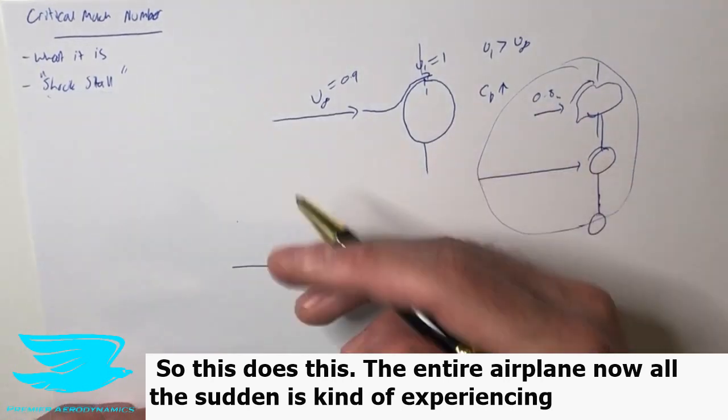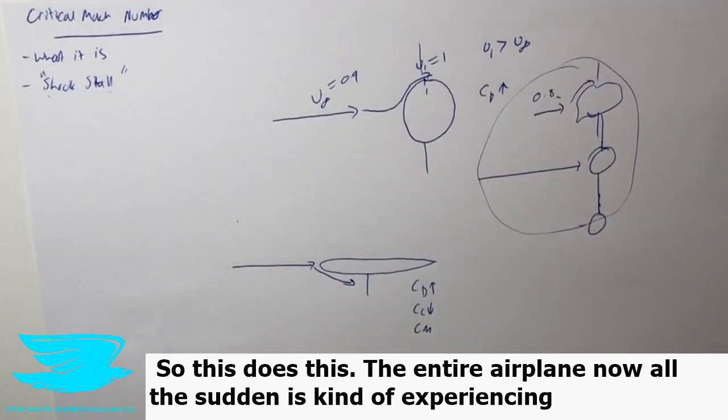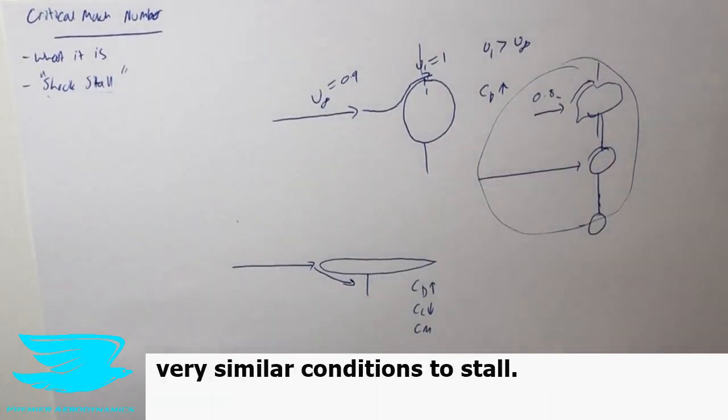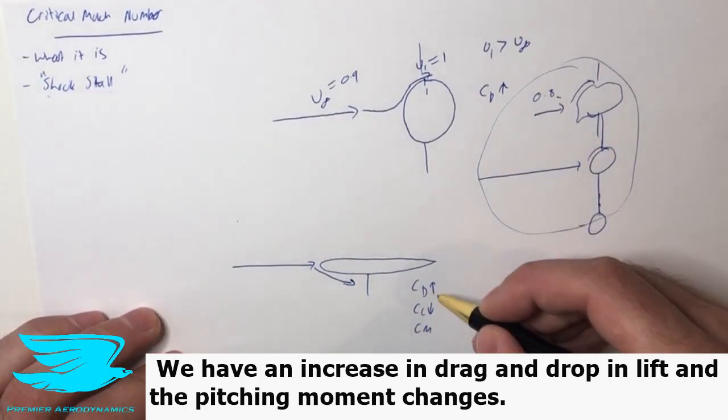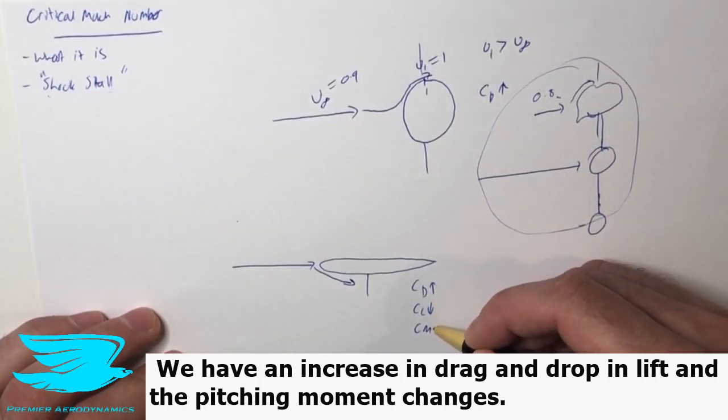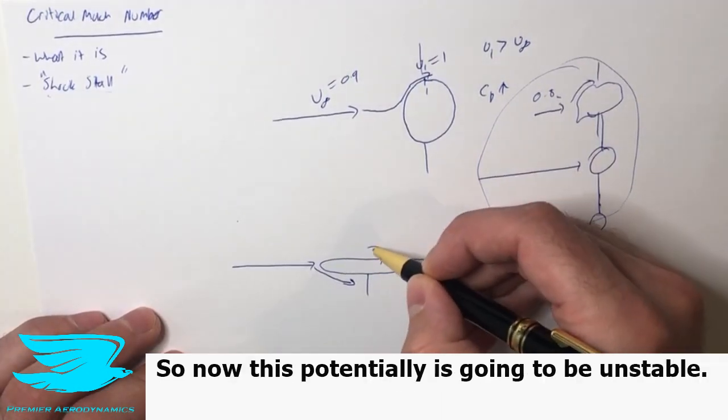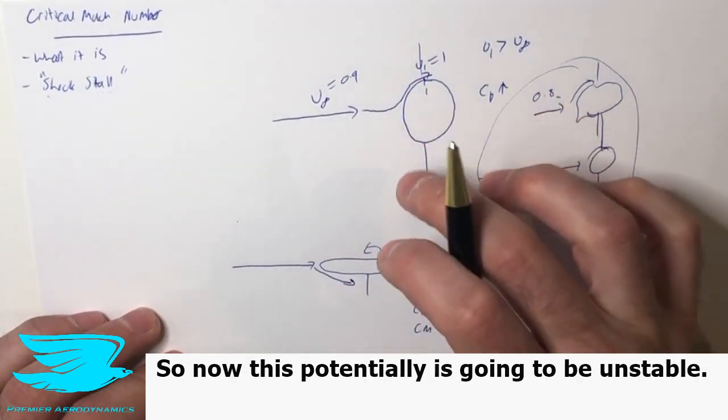So what this does is the entire airplane now all of a sudden is experiencing very similar conditions to stall. We have an increase in drag, a drop in lift, and the moment changes so now this potentially is going to be unstable.